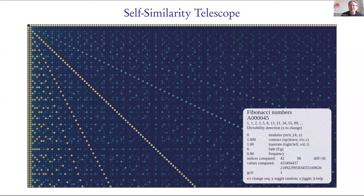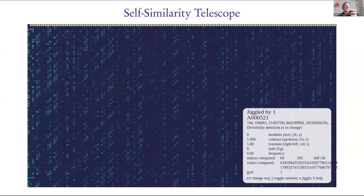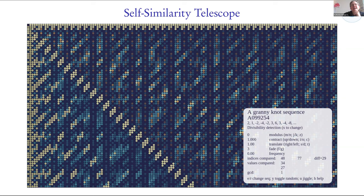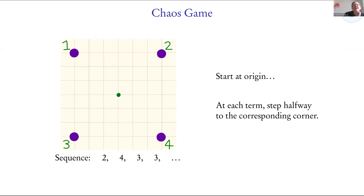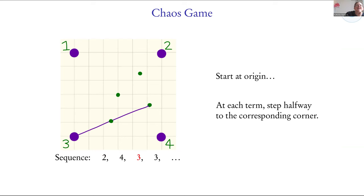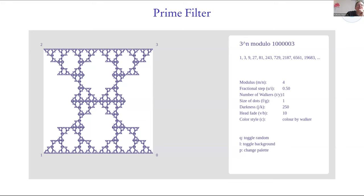There's a feature to jiggle the integers by plus or minus random ones to see if the pattern survives, because then it's about growth rate as opposed to divisibility. I'm running out of time, so I'll just say a couple of last words: there are a couple more examples including one about divisibility of primes within a sequence, and the chaos game, which picks up lots of cool properties of different sequences — but I better stop. Mathematics is not merely a matter of understanding, but quite essentially a matter of imagination. Thank you.